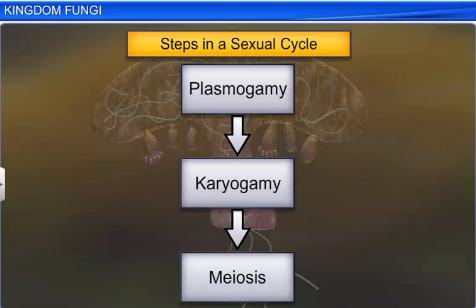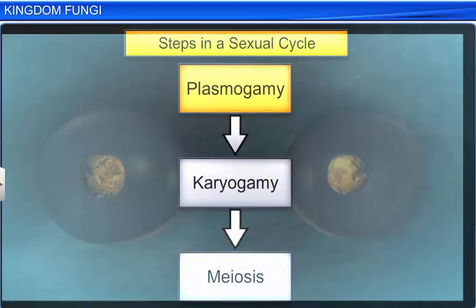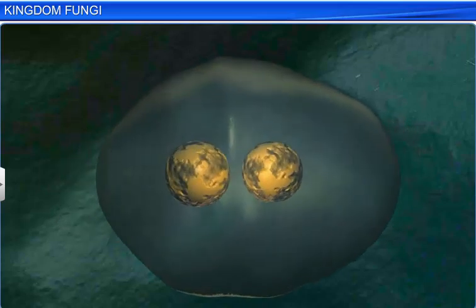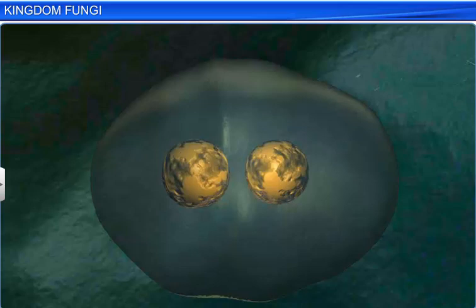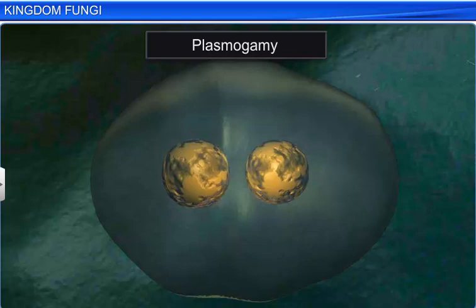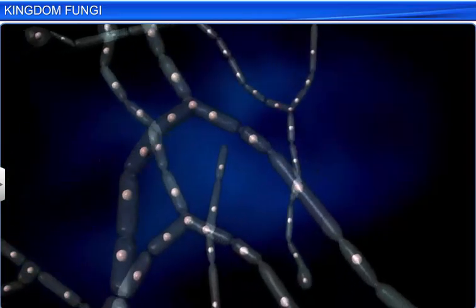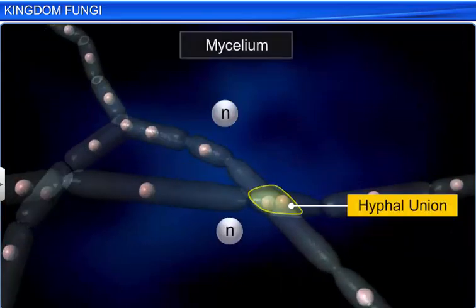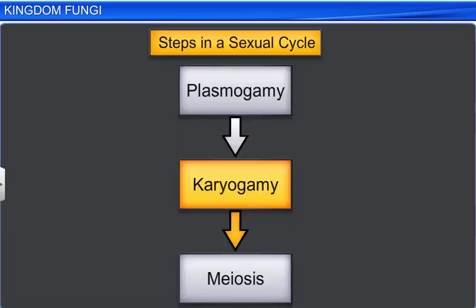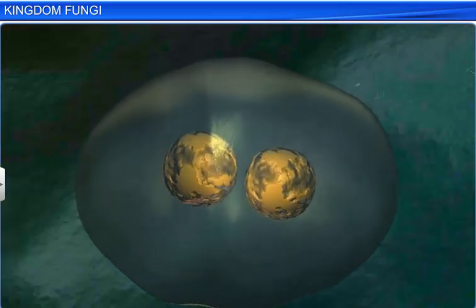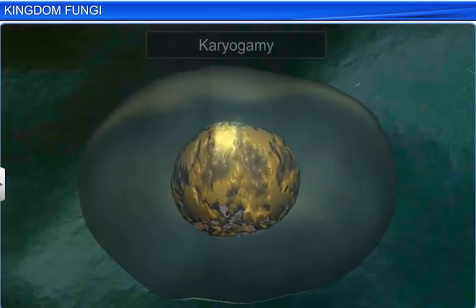There are three steps in the sexual cycle: plasmogamy, karyogamy, and meiosis. The first stage involves the fusion of protoplasms between two motile or non-motile gametes. This is called plasmogamy. Plasmogamy occurs when two haploid hyphae of compatible mating types fuse. After plasmogamy, the two nuclei fuse together in the second stage, known as karyogamy.